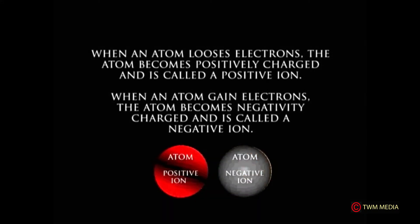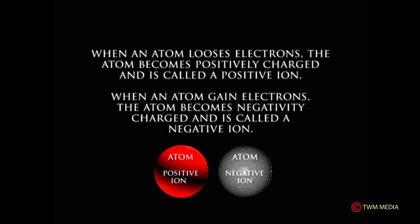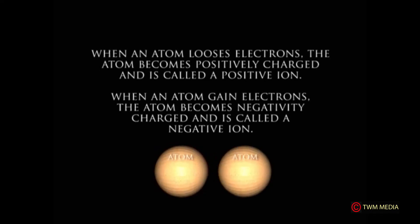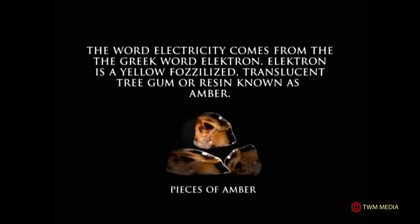When an atom loses electrons, the atom becomes positively charged and is called a positive ion. When an atom gains electrons, the atom becomes negatively charged and is called a negative ion. The word electricity comes from a Greek word 'electron,' which is a yellow fossilized translucent tree gum or resin known as amber.